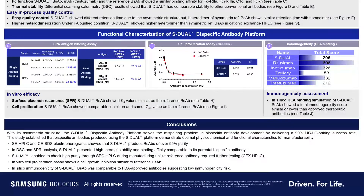Finally, let's discuss immunogenicity. Since bi-specific antibodies inevitably undergo engineering, evaluating their immunogenicity is crucial. Thanks to the IgG-like structure adopted in S-DUAL, it exhibits low immunogenicity. As shown in this in silico data, it demonstrates immunogenicity levels similar to or lower than other antibody therapeutics. We encourage you to consider plugging your CDRs into the S-DUAL platform to expedite development.